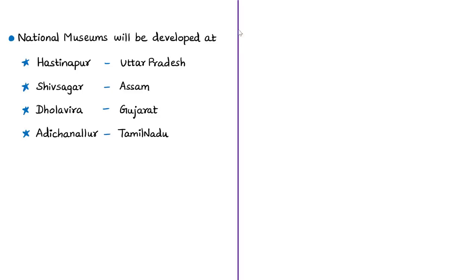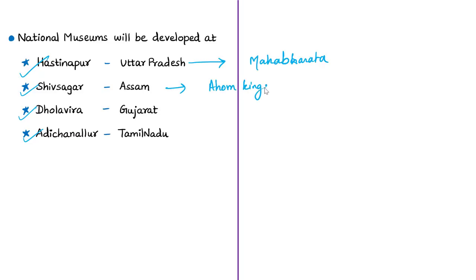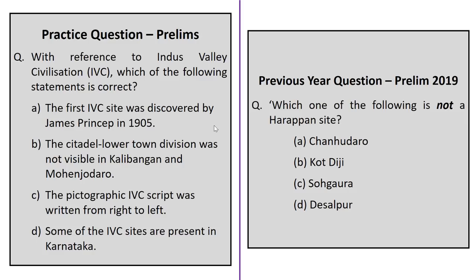In addition to Rakigadi, four other places will be developed as iconic sites with national museums: Hastinapur in Uttar Pradesh, the famous capital of Kauravas and Pandavas in the Mahabharata; Shiv Sagar in Assam, famous for monuments of the Ahom kingdom; Dholavira in Gujarat, an important IVC site; and Adichanullur in Tamil Nadu, an important archaeological site where excavations are still ongoing.